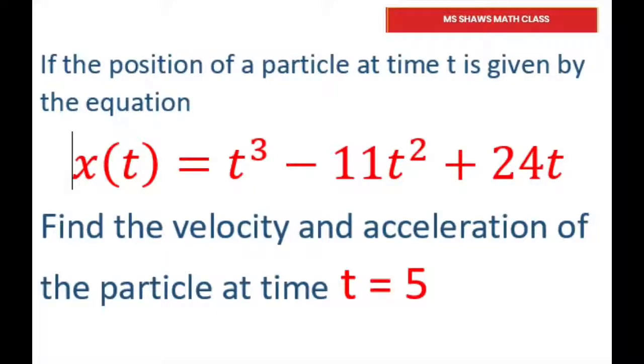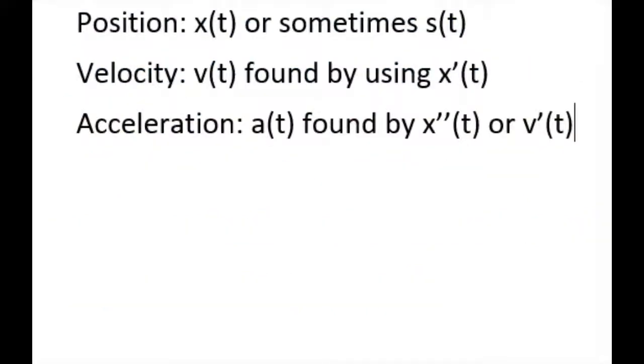So this is the introductory video. Basically your position is given by x of t, sometimes it's called s of t. The velocity v of t is found by taking the derivative of x of t, and acceleration is found by x double prime of t or v prime of t.